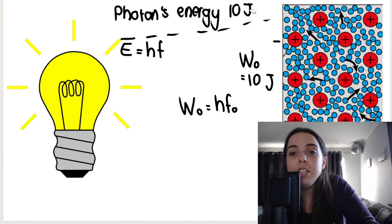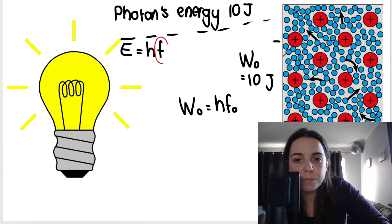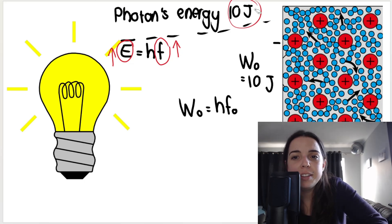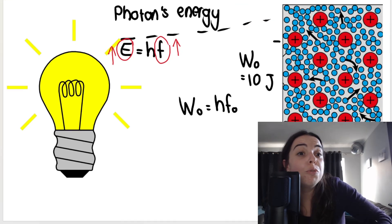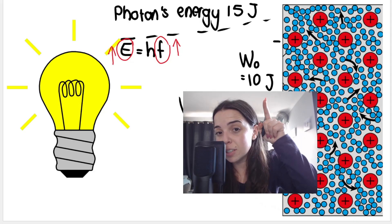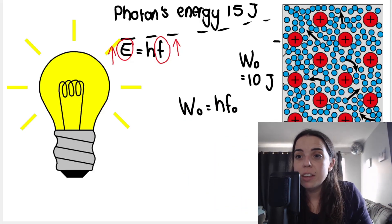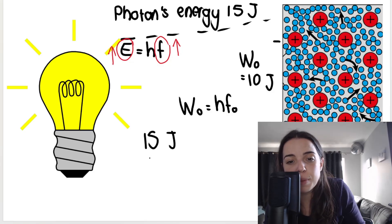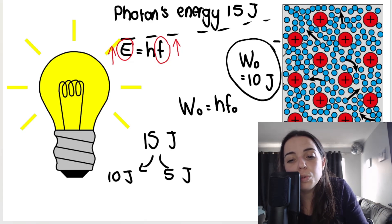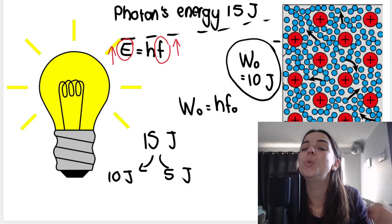If I have 10 joules of energy shining on that metal and the work function is 10 joules, that's enough energy to allow the electrons to escape. However the electrons don't move off with a kinetic energy. They have enough energy to escape the metal surface but they don't have a velocity, they don't have a kinetic energy.